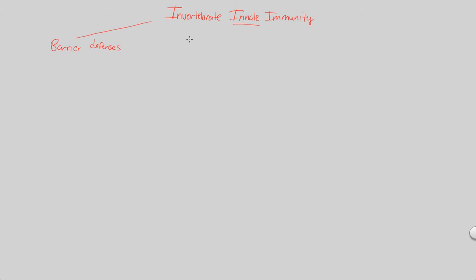Let's look at how invertebrates, specifically insects, prevent entry. First and foremost, their exoskeleton is made of chitin, a material that many microorganisms really don't like. A chitin exoskeleton acts as a quite effective shield against foreign invaders like pathogens, ensuring that disease-causing agents don't enter the internal system. It is a barrier defense.